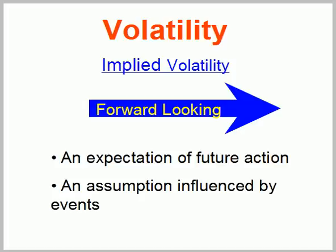For an example of upcoming events, think of earnings. That's where you'll see implied volatilities rise, even though the stocks may not be doing much. For an example of this, let's turn to Google.